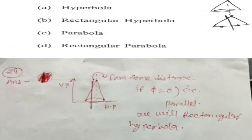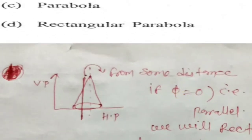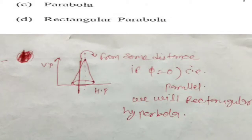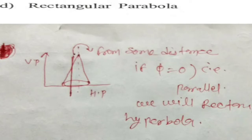Once you are cutting parallel to VP, there is no angle between its axis and its plane — phi equals 0. When phi equals 90 you will get a circle. If phi is less than 90 you will get a parabola, and if phi is very much less than the vertex angle but greater than 0 degrees, you get a hyperbola. If phi is exactly 0, you will get a rectangular hyperbola — meaning the cutting plane is parallel to the axis or vertical plane.